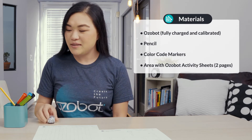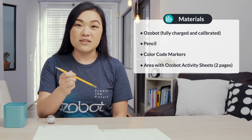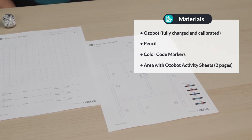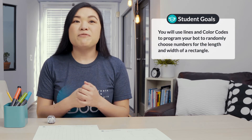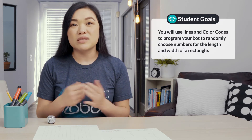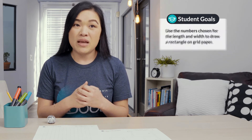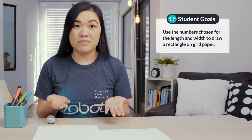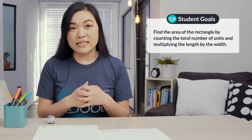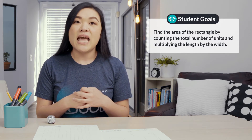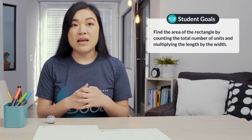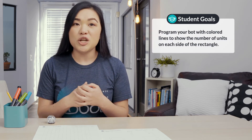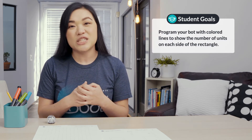For today's lesson you will need an Ozobot fully charged and calibrated, color code markers, a pencil, and both pages of your area with Ozobot activity sheets. In today's lesson you will use lines and color codes to program your bot to randomly choose numbers for length and width of a rectangle. You will use the numbers chosen to draw a rectangle on grid paper, find the area by counting units and multiplying the length by the width, and program your bot with colored lines to show the number of units on each side.